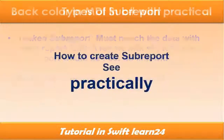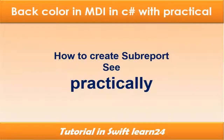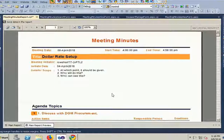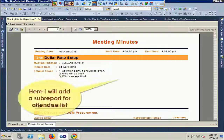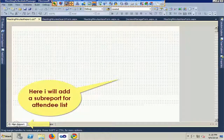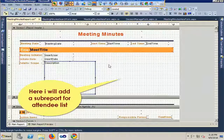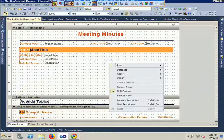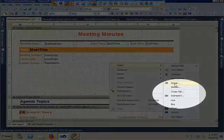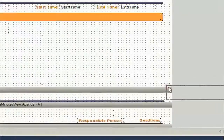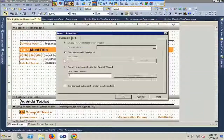How to create a sub-report? Go to the main report, insert sub-report. Right-click and insert the sub-report and place it anywhere.